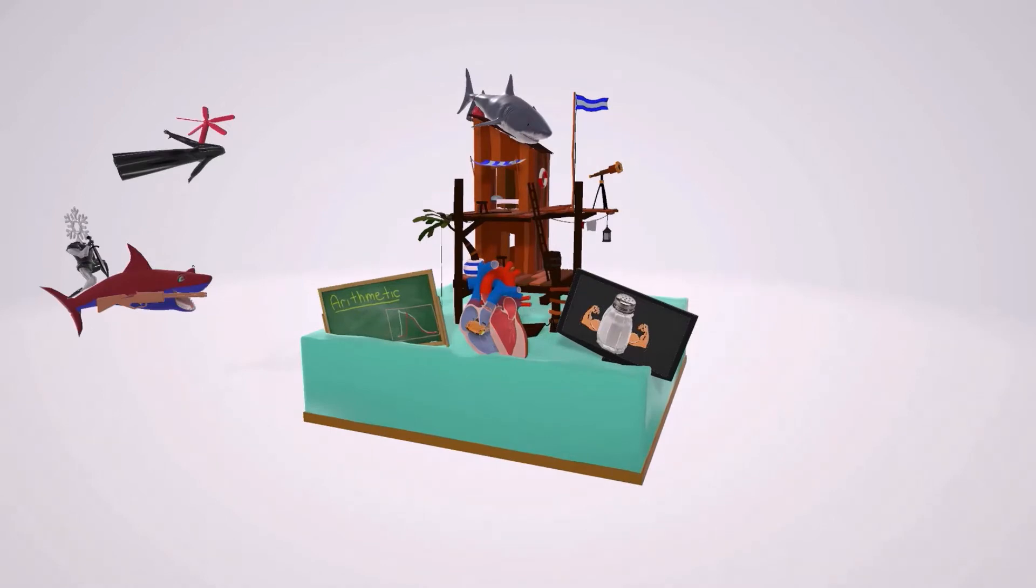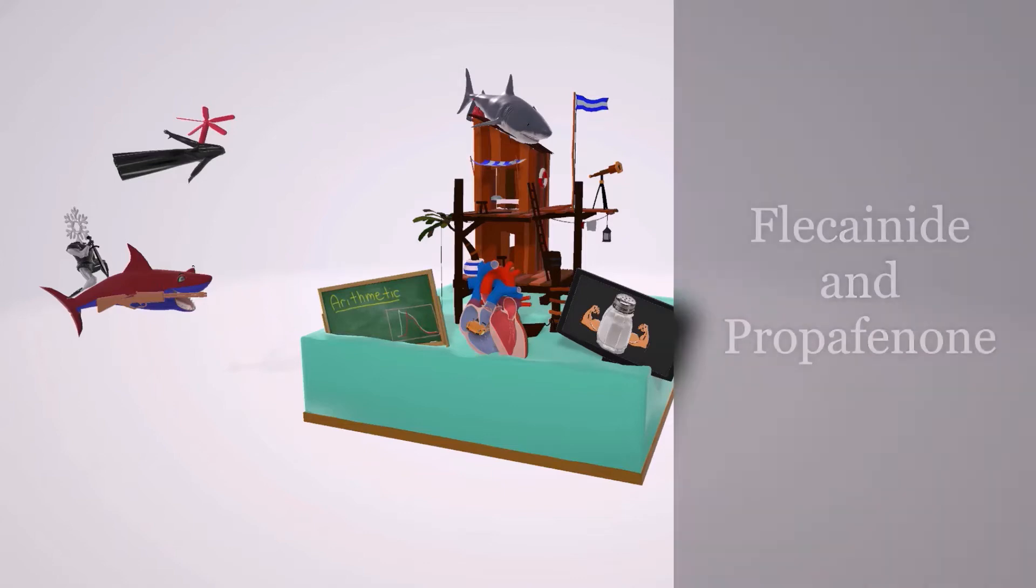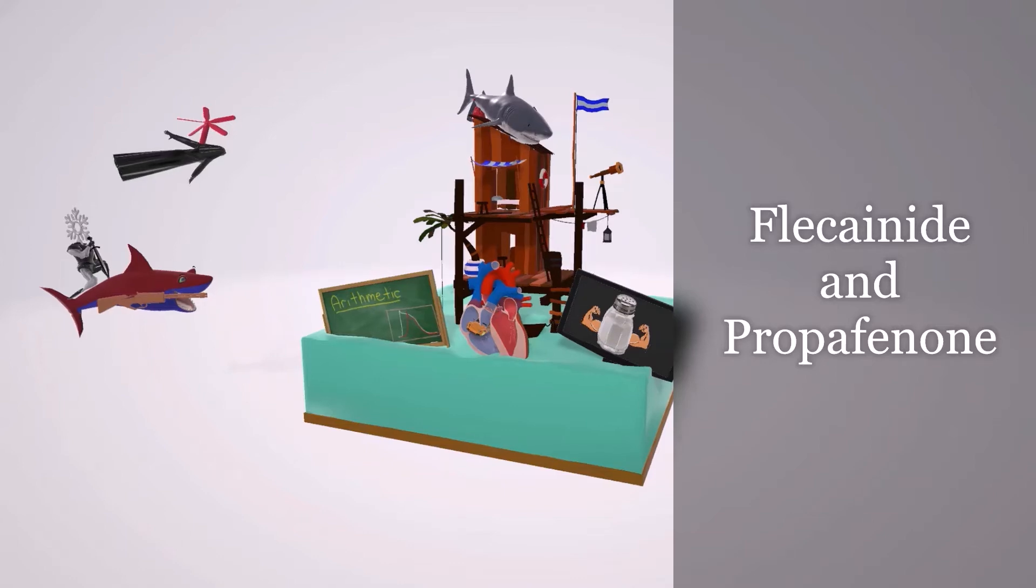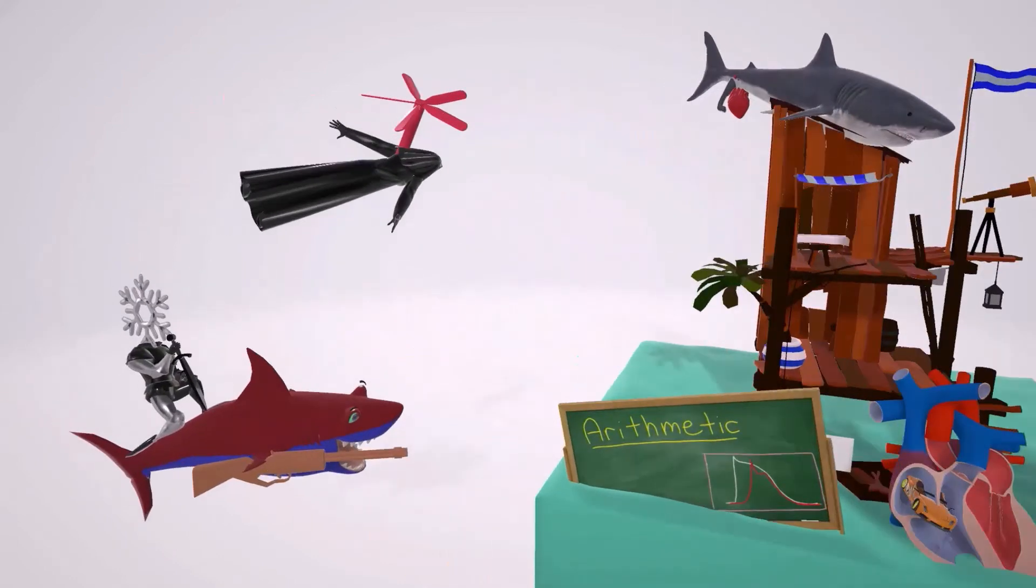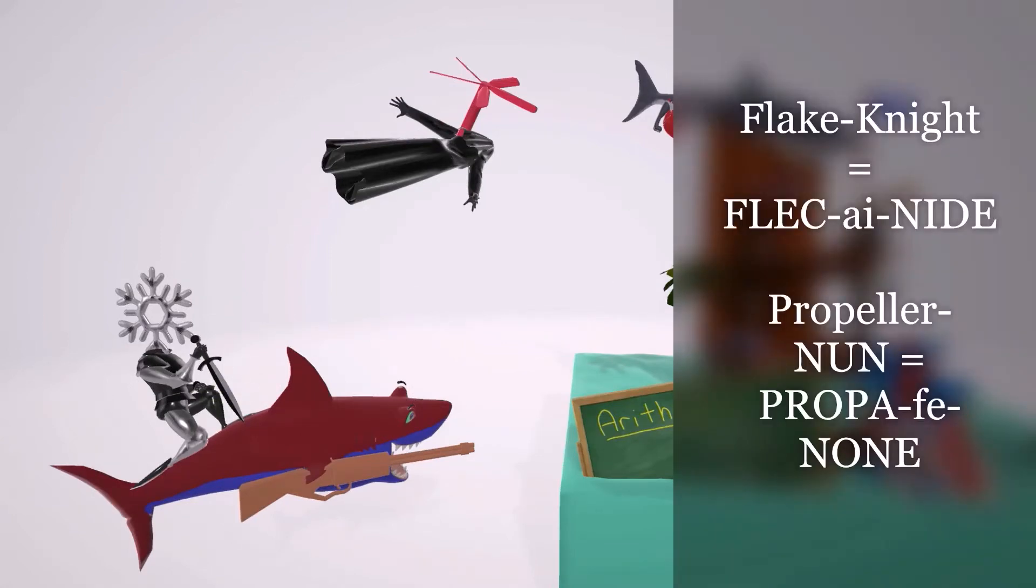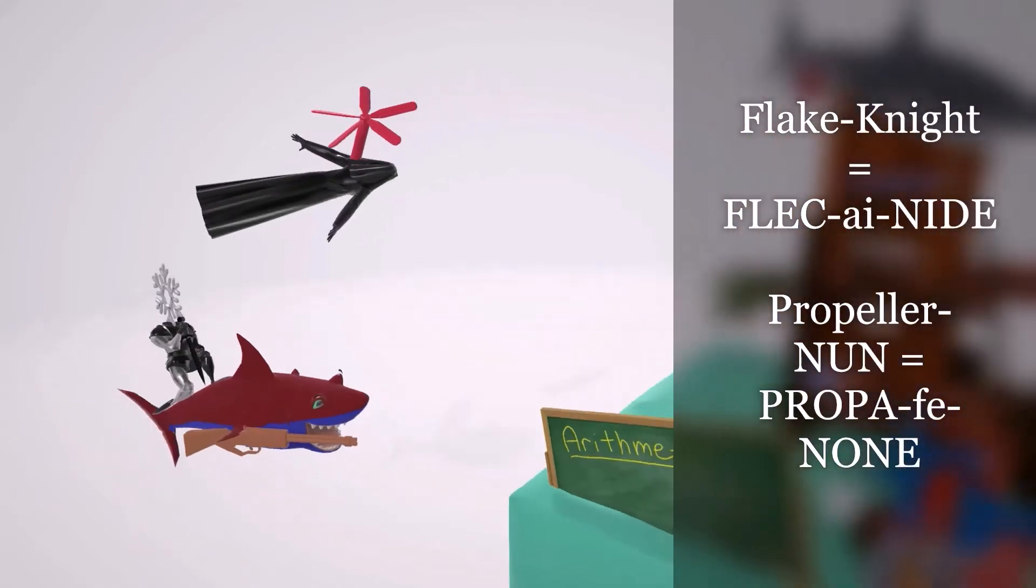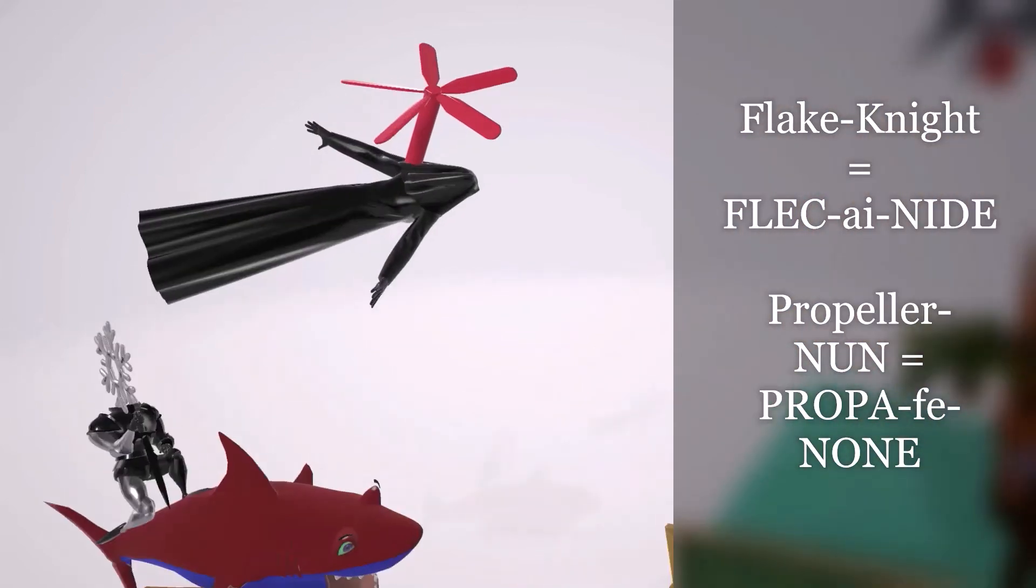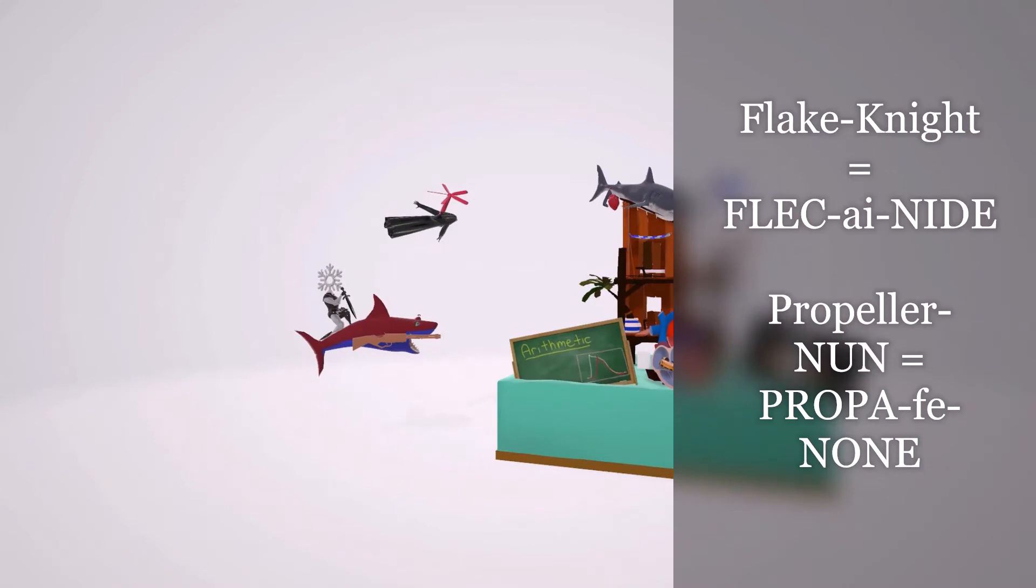So again, class 1C anti-arrhythmics. Common class 1C anti-arrhythmics include flecainide and propafenone. And how do you remember that? Well, let's take a look at this evil shark over here. We see that there's this flake, this snowflake who is also a knight that's riding on his back. So the flake that's a knight for flecainide, and we also note this nun over here who has the propellers. She's the propeller nun, propeller nun for propafenone.